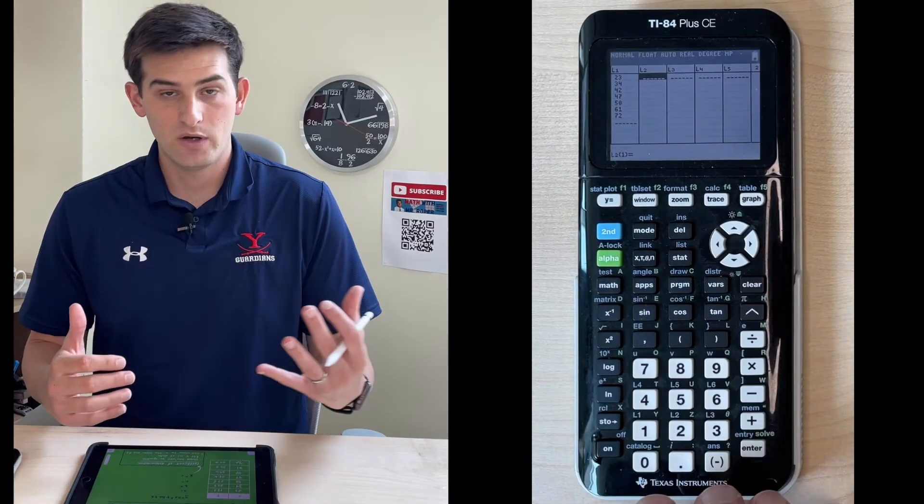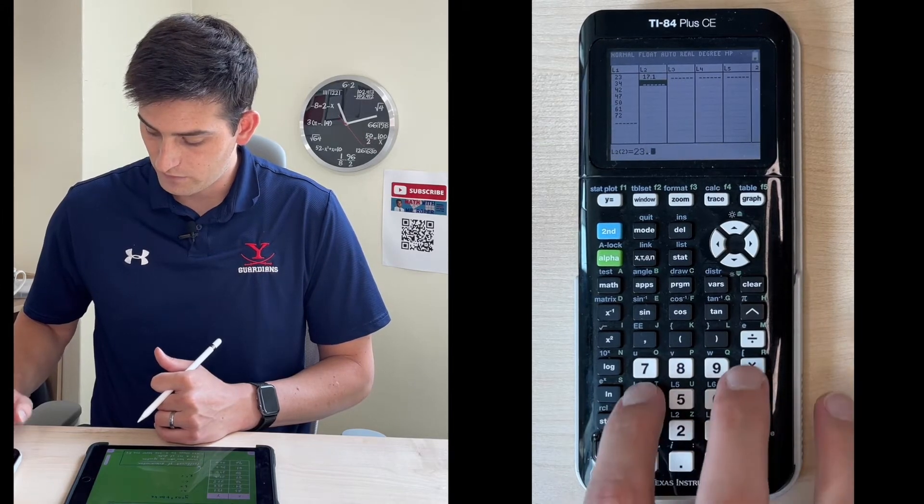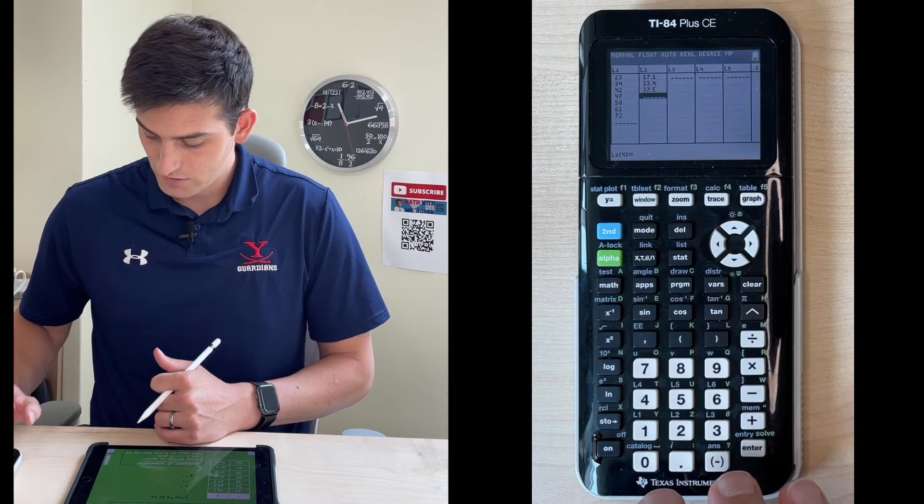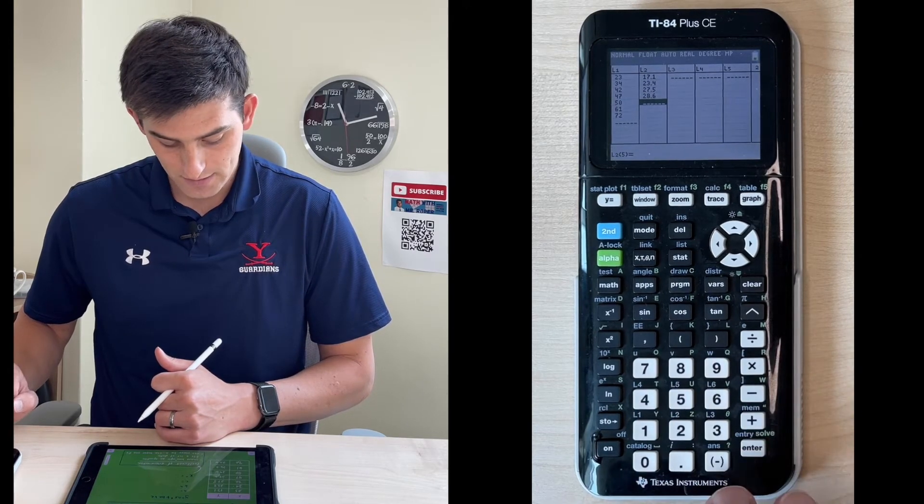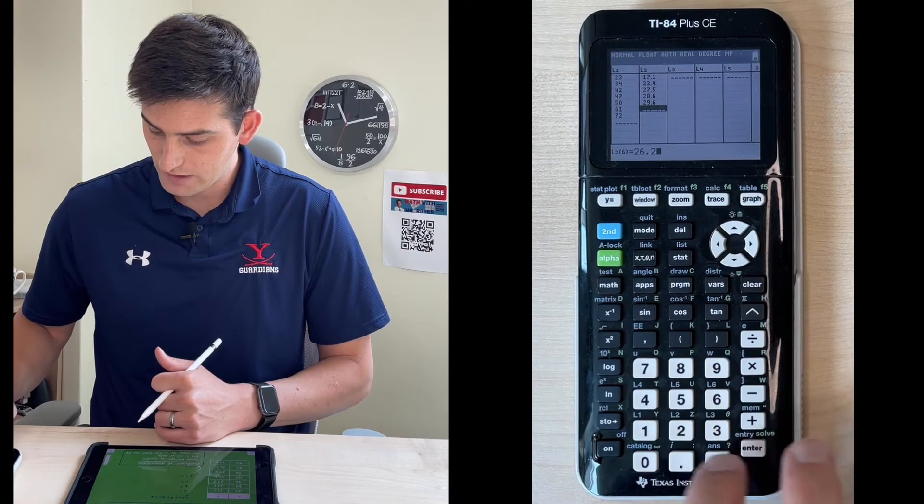I'm going to go over to L2. That's going to be my y values: 17.1, 23.4, 27.5, 28.6, 29.6, 26.2, and 22.